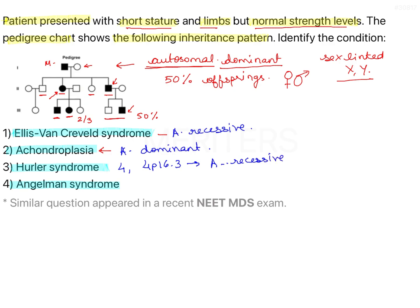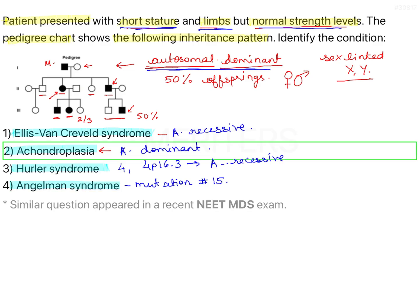Angelman syndrome is a genetic disorder primarily affecting the nervous system, with delayed development, intellectual disability, speech impairment, and problems with movement and balance. It is not typically inherited in a classic pattern — it is mainly caused by a mutation on chromosome 15, with complex genetics. Looking at the pedigree chart showing an autosomal dominant trait, combined with clinical features matching achondroplasia, the correct answer is achondroplasia.